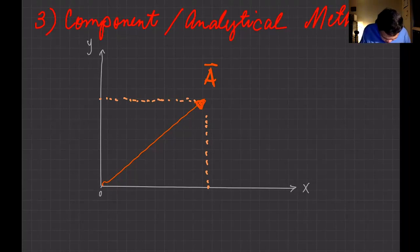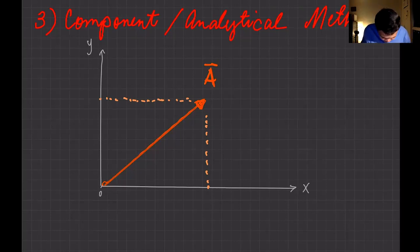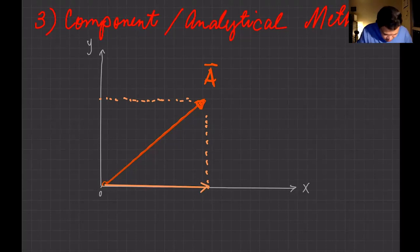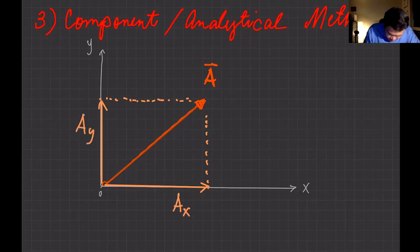So here in our notes, this is our vector, and these are its component vectors: the projection along x and the projection along y. You can draw these — this is your x component, which we call Ax, and this is your y component, which we call Ay.